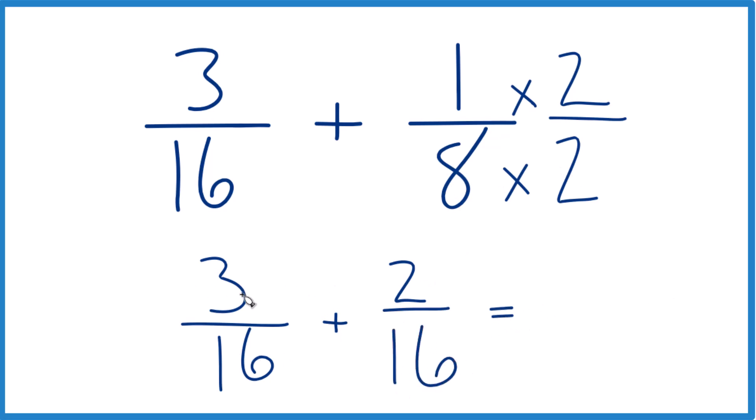I can just add the numerators. 3 plus 2 is 5 and then you bring that denominator across, 5/16. So 3/16 plus 1/8, the answer is 5/16.